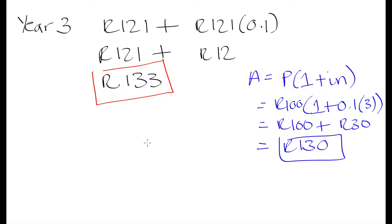In the last video, we did an introduction into compound interest and the difference between compound interest and simple interest. In blue we calculated how much we would get using simple interest, versus in red what we would get using compound interest. Compound interest is when we are charged interest not only on our principal but also on the interest gained on that principal — interest on interest — versus simple interest, which is only charged based on the principal amount.